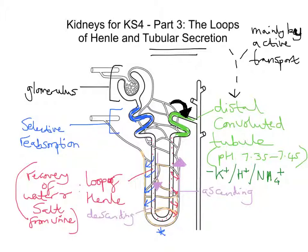So this video is all about the loop of Henle and the control and reabsorption of water and salt, and the process of tubular secretion, where ions, drugs, and hormones pass from the capillaries into the distal convoluted tubule to maintain a healthy pH level. In part four, we'll pick up on the last part of the nephron — the collecting duct — and talk about osmoregulation there.